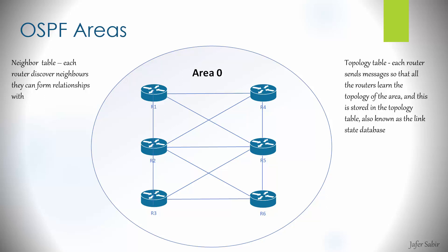All routers have the same topology map — a map of every router within the area and all the networks behind them. For example, R1 has many paths to R2: it can go one way, another way, or yet another way. All of these paths are held in the topology table, which contains all the different routes to networks within an area. All routers in an area will have the same topology table, but based on where they are, they will have different routing tables.